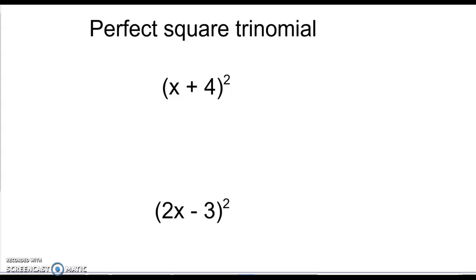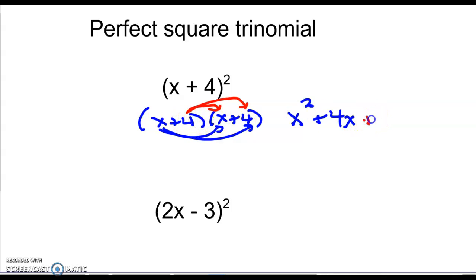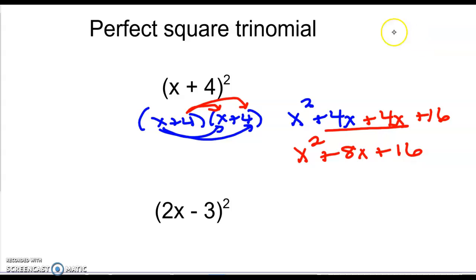You also have what's called a perfect square trinomial. That means you had one set of parentheses that was squared — when you square it, you write it twice. You take x and distribute it to both terms in the second set of parentheses, then take the 4 and distribute it too. So 4 times x is 4x, and 4 times 4 is 16. Combine the middle terms to get like terms.